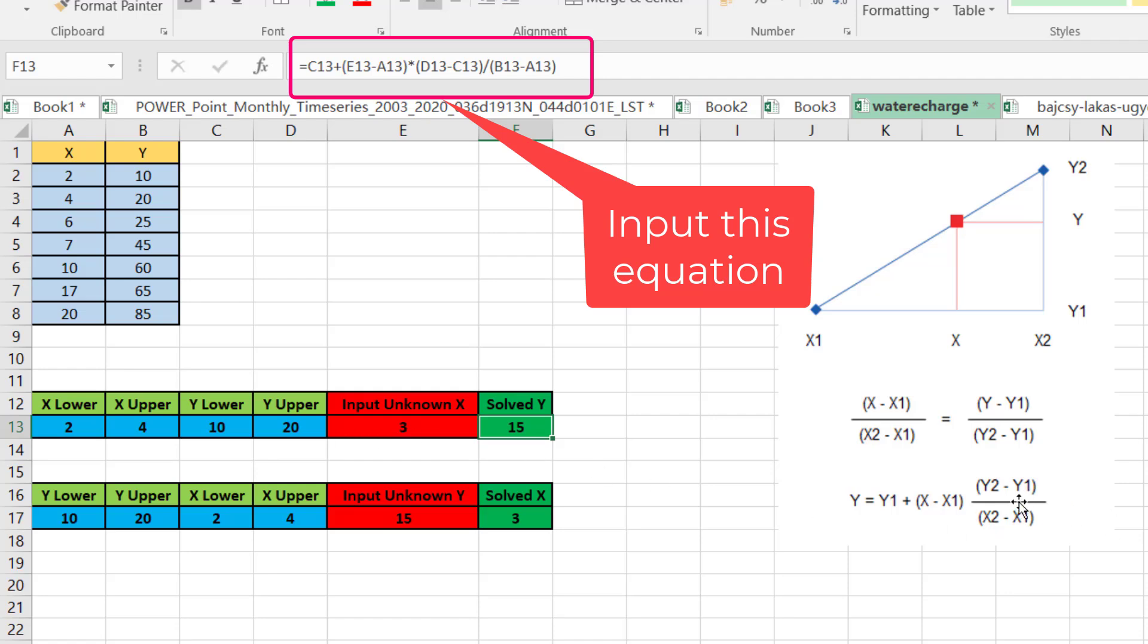Which equals (20 minus 10) over (4 minus 2). OK, we get the result as you see, it's 15. For example, I want to find the y value between 10 and 17, so x lower this time will be 10.